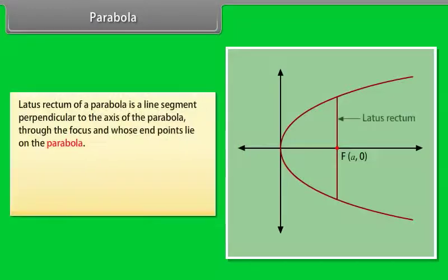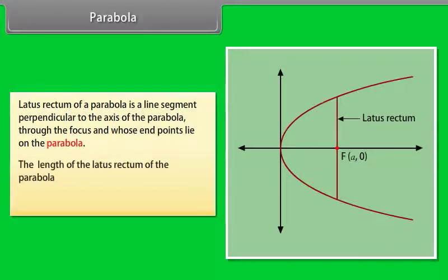Latus rectum of a parabola. Latus rectum of a parabola is a line segment perpendicular to the axis of the parabola through the focus and whose end points lie on the parabola. The length of the latus rectum of the parabola y² = 4ax is 4a.